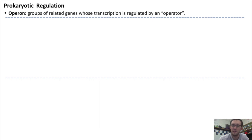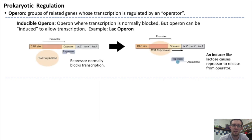We've gone over two types of examples in class. The first is inducible operons — for example, the lac operon, which controls the production of lactose digestion enzymes. What makes the lac operon an inducible operon is that there is normally a repressor blocking transcription of the lactose enzyme genes. However, this operon can be induced to start transcription by the presence of an inducer like lactose, which binds to the repressor and removes it from the operator.